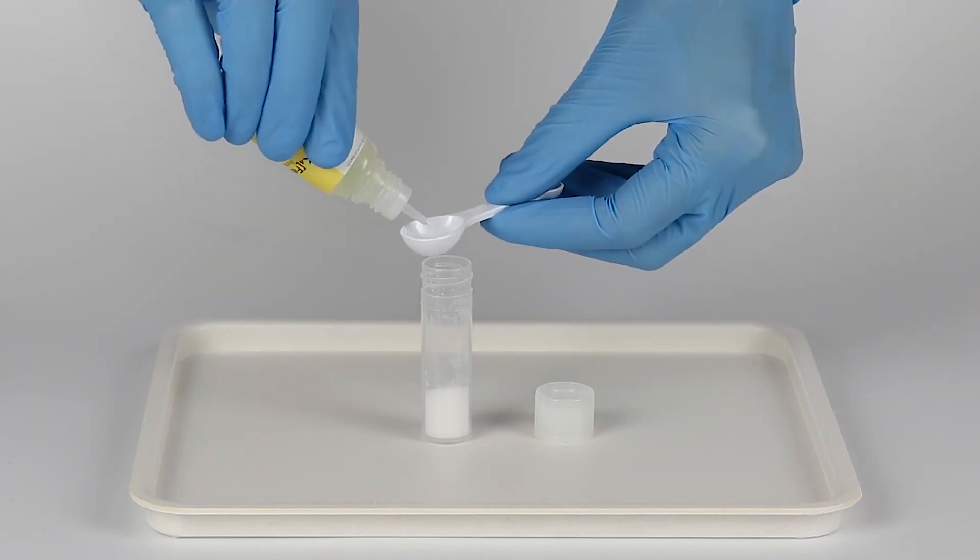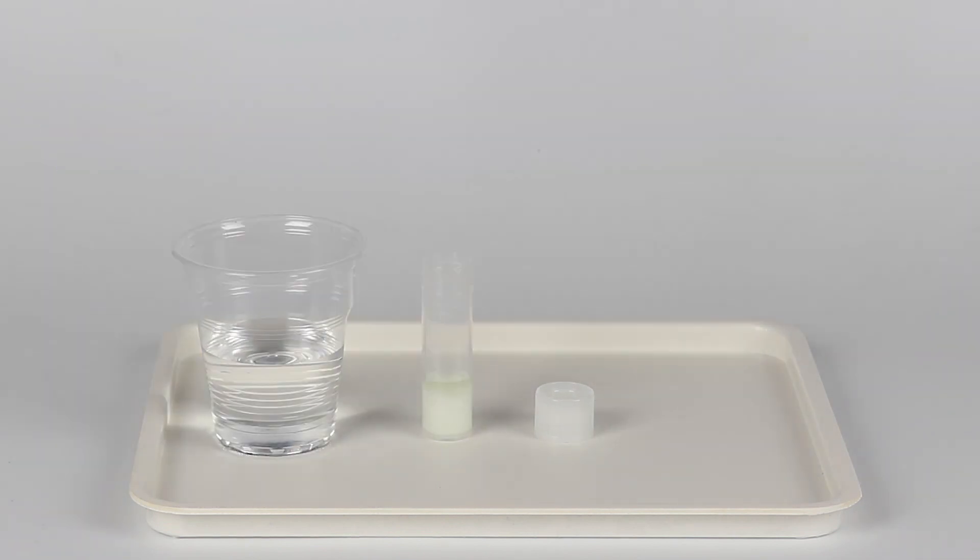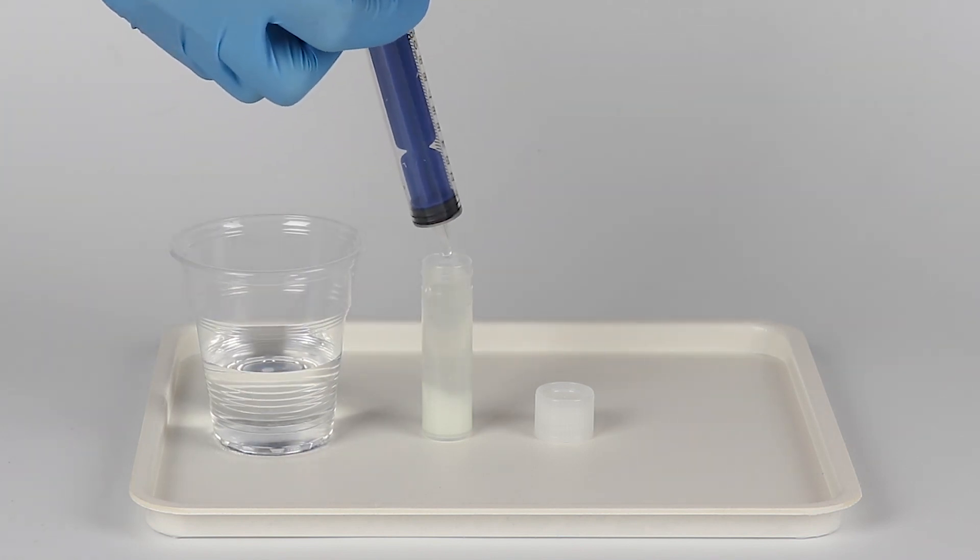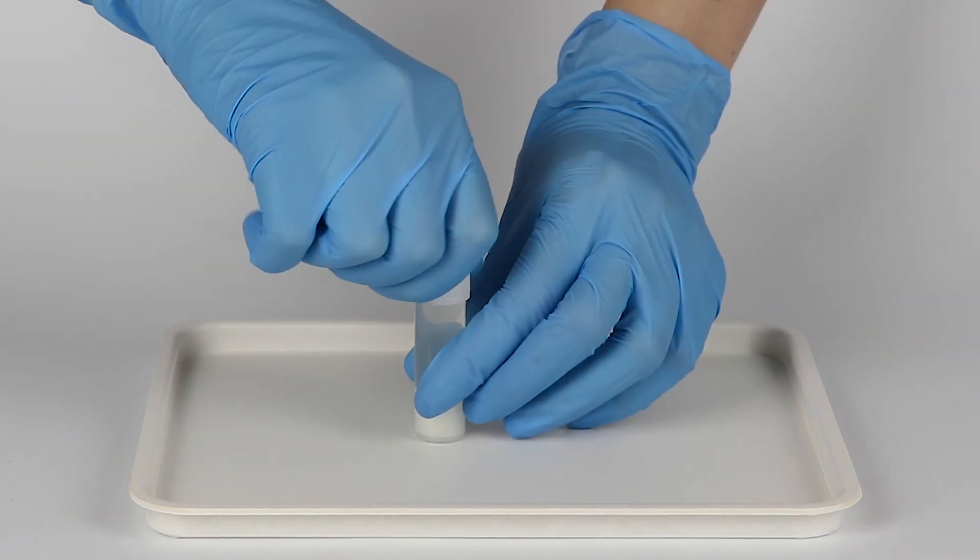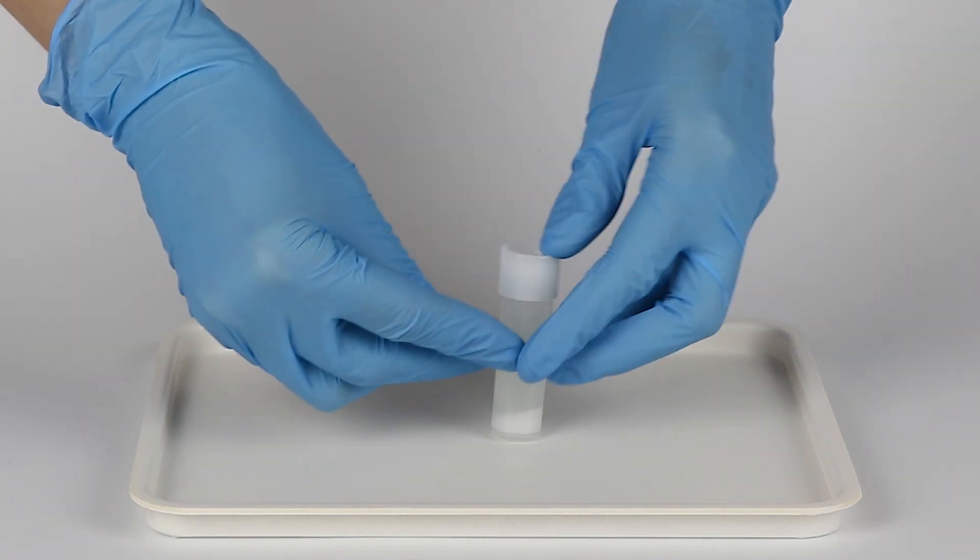Then add one big spoon of potassium ferrocyanide. Using the syringe, fill the vial the rest of the way with water. Close it with the cap and shake thoroughly to mix the contents. Put the vial into the holder.